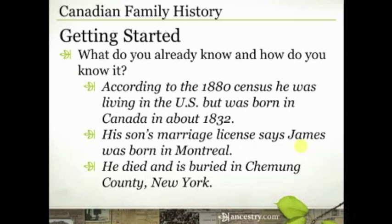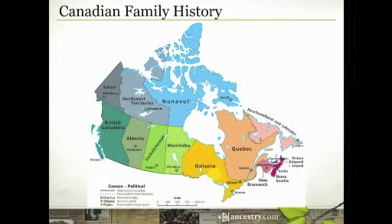So this is just how I get started in any research project. I define the question and then I make a list of what I already know and how I know it. You'll notice I haven't put full sources here, but there's a census involved, a marriage license, and some death and burial information — so I'm not just copying this information from a book or from somebody else. We're looking for original records that will give us documentation or proof of what we know. Now, I've talked a little bit about maps, and I'm a big fan of maps especially when it's a new area to me — I want to know the geography and have a picture in my head of what it is that I'm looking for.